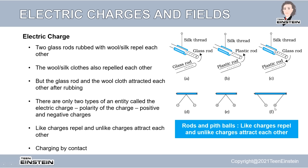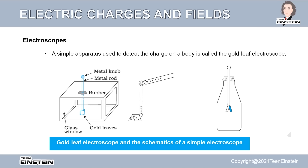So how do we know if an object is charged or not? Charging happens when you rub a glass rod with silk or wool — charges get transferred from one object to another. But you can't see the charges. To detect the charge on a body, we have an apparatus called a gold leaf electroscope — a simple apparatus with two gold leaves connected to a metal rod and knob, insulated and kept inside a glass box.